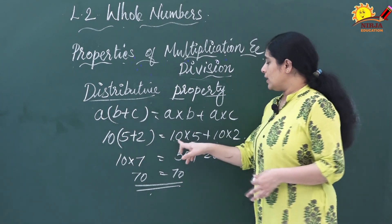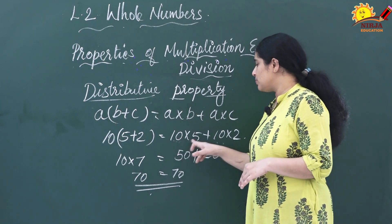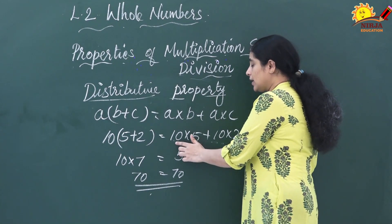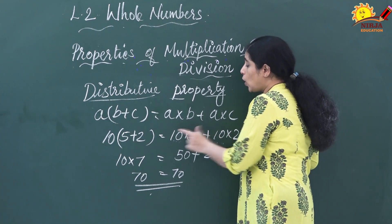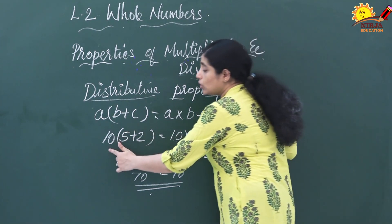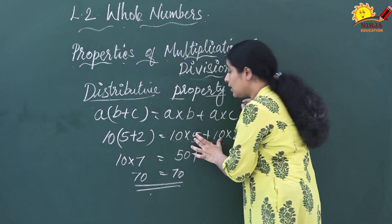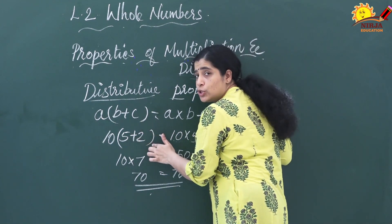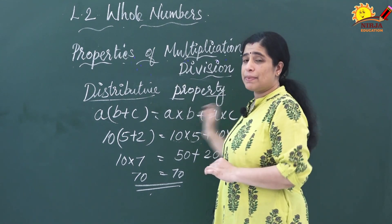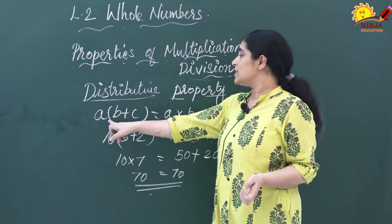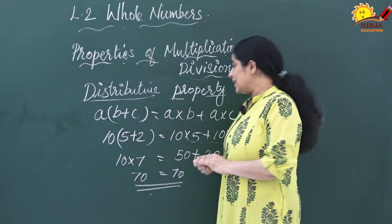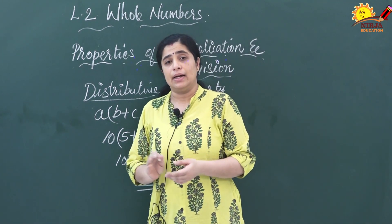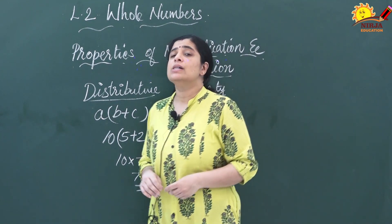Here you can see that 10 is common in both terms: 10 × 5 + 10 × 2. We can take the common number 10 outside and keep the remaining numbers in a bracket: 10 × (5 + 2). This is the two ways to represent the distributive property — either expand it as A × B + A × C, or factor it as A × (B + C). So the distributive property has been verified.